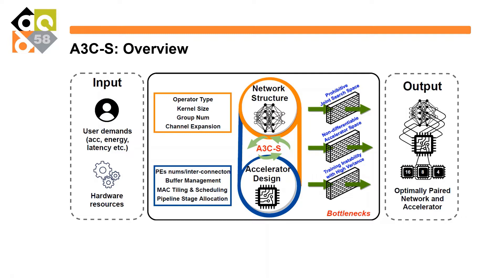The whole framework tackles three major challenges: the prohibitive joint search space, the non-differentiable accelerator space — since all accelerator parameters form a non-differentiable space — and training instability with high variance during the DNAS process for deep RL. The output is an optimally paired network for deep RL and the matching accelerator, maximizing both hardware efficiency and task accuracy.